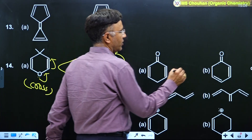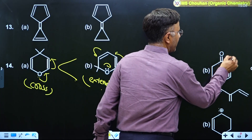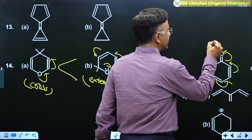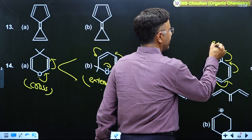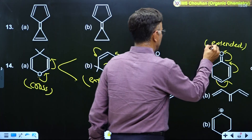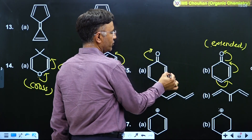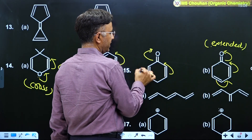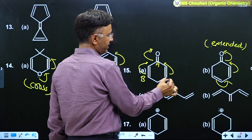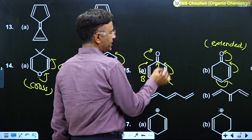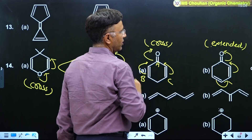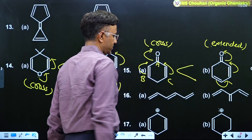In example 15, the pi bond is in conjugation with another pi bond, which is in conjugation with another pi bond — this is extended conjugation. In the other case, if this is A, this is B, and this is C, the pi bond is in conjugation with both B and C in parallel — that is cross conjugation. Extended is more effective than cross.